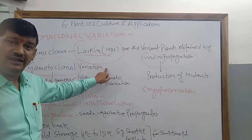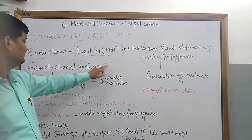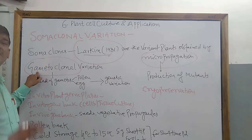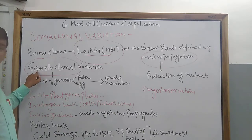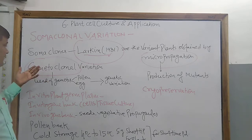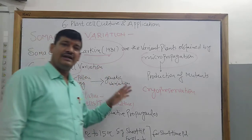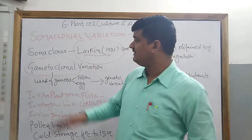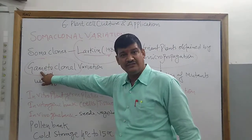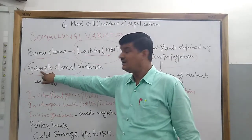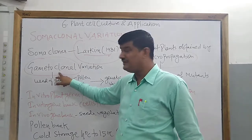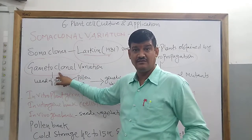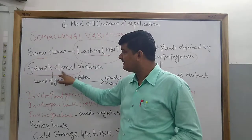Gametoclonal variation is the output of taking gametes or gametophytic origin of plants. For example, pollen grains or egg cells are cultured in vitro, and the plant produced shows some sudden changes; therefore it is known as gametoclonal variation. In somaclonal variation we use somatic cells, whereas in gametoclonal variation we use gametophytic cells. This is the difference between somaclones and gametoclonal variation.